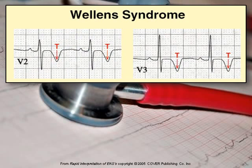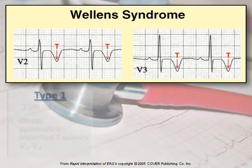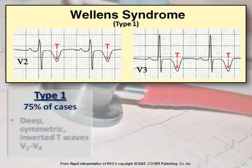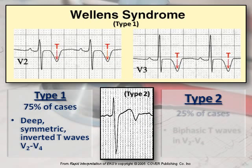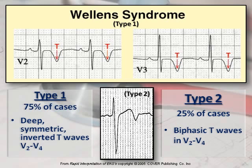How do we recognize Wellens syndrome? Looking at V2 and V3, the classic Type 1 Wellens — seen in 75% of cases — shows a deep symmetric inverted T wave. There is another form, Type 2, which is a biphasic T wave, seen in 25% of cases — meaning the T wave goes up above the isoelectric line and then drops down below it.